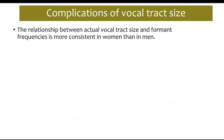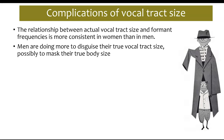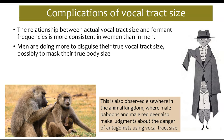There are complications when thinking about vocal tract size. The relationship between vocal tract size and formant frequencies seems more consistent in women than in men — meaning you can measure formant frequencies of women and get a pretty good estimate of their size, but doing the same for men may give the wrong answer. This suggests men may do something to disguise their true vocal tract size, possibly to mask body size — a behavior also observed in red deer and baboons, who make judgments about potential predators or mates based on perceived vocal tract size.